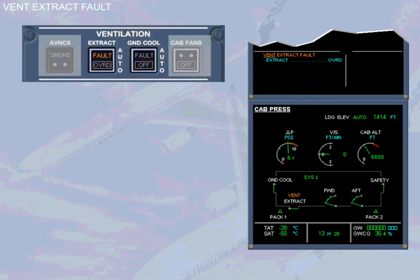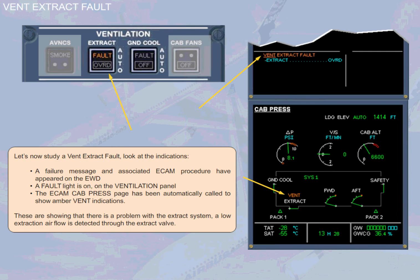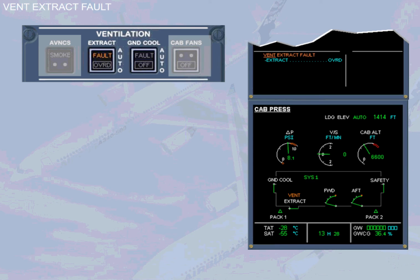Let's now simulate a VENT EXTRACT fault and look at the indications. A failure message and associated ECAM procedure have appeared on the engine warning display. A fault light is on the ventilation panel, and the ECAM CAB PRESS page has been automatically called to show amber VENT indications. These show that there is a problem with the extract system — a low extraction airflow is detected through the extract valve.